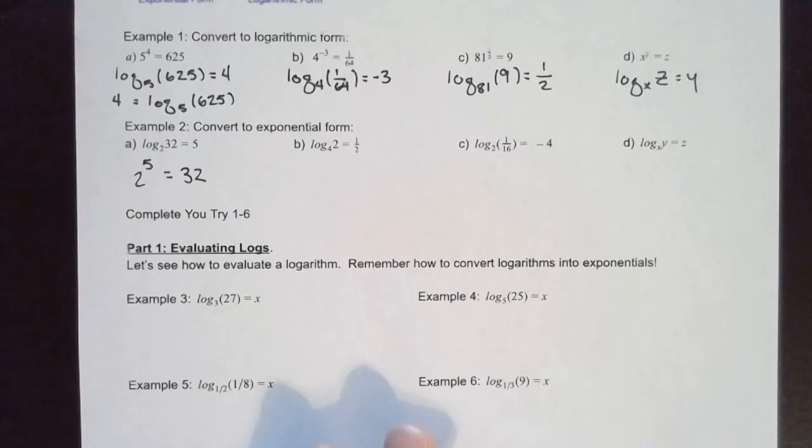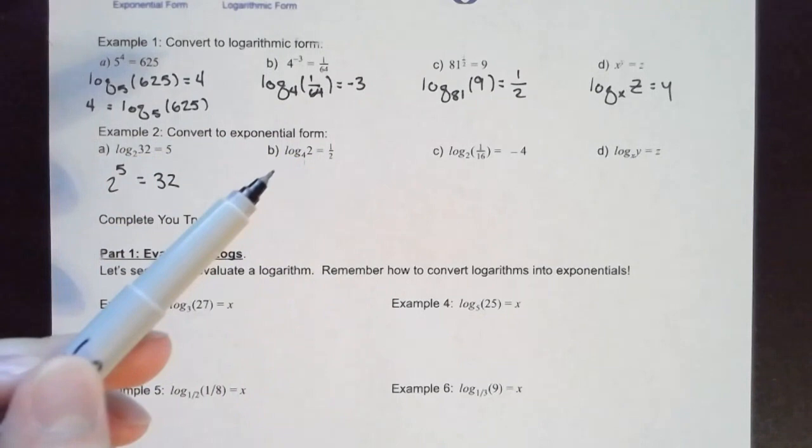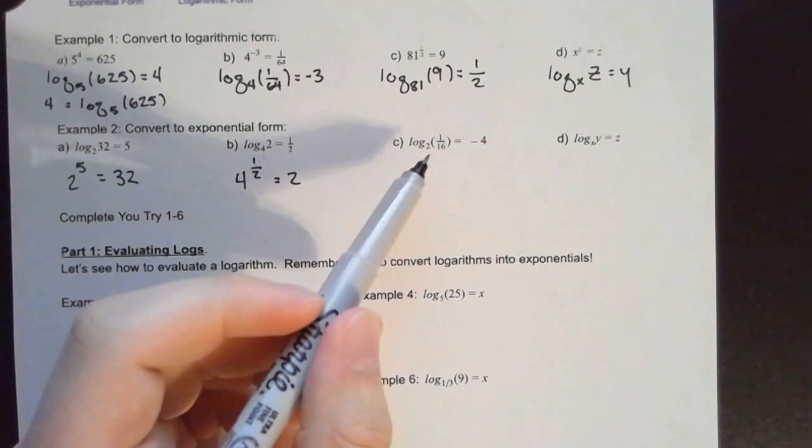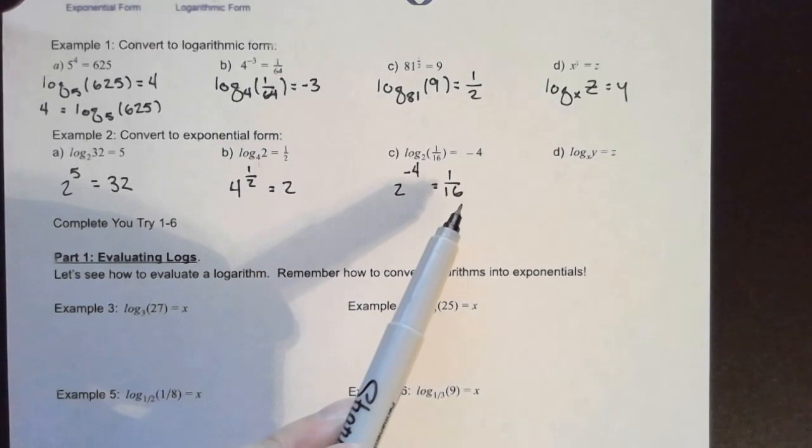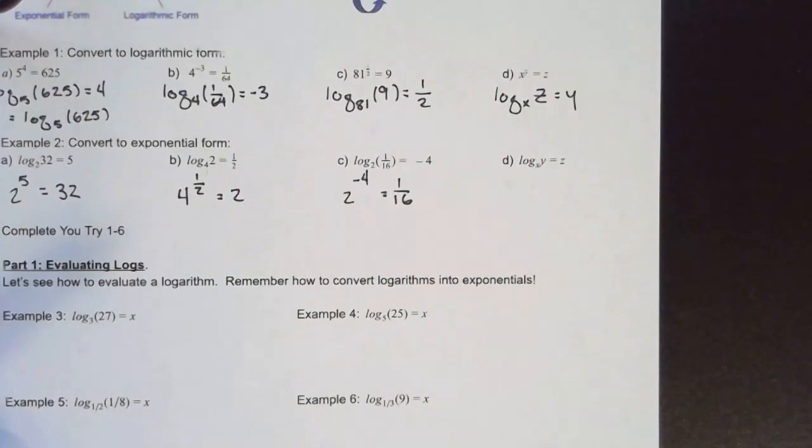Our base here is 4, our exponent is 1/2. Here the base is 2, the exponent is negative 4, and the outcome is 1/16 — which makes sense, since negative exponents give us inverted outputs. And then we have an example with just variables: x to the z power equals y.